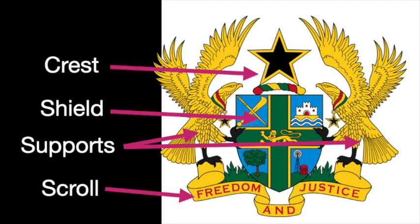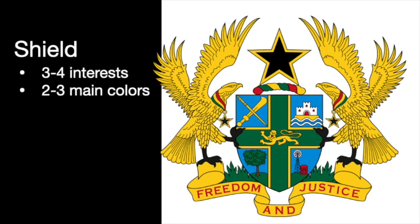Let's talk about the individual parts, starting with the main central part — the shield. For your personal crest, you're going to create a shield that has between three and four images of things that you are personally interested in. Maybe you're interested in music, so you might put some musical notes. Maybe you're interested in baseball, so you might put a baseball bat or a glove. Or maybe you're interested in Minecraft, so you might put some Minecraft-style blocks as a symbol on your shield. The symbols are completely up to you based on your personal interests.